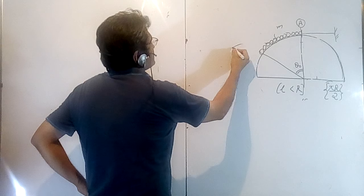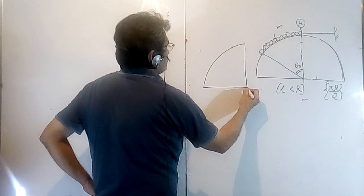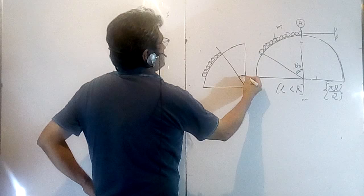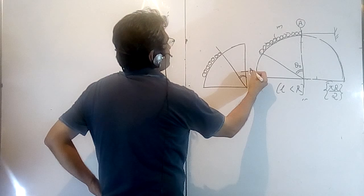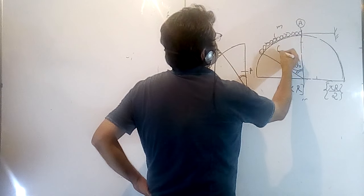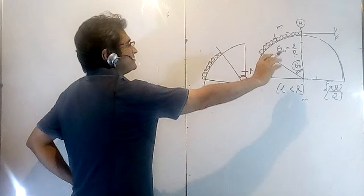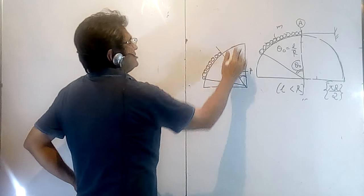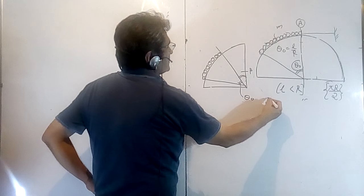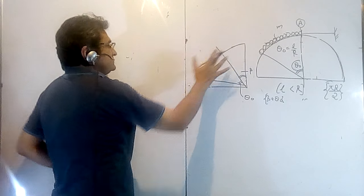Let us take a general situation where the chain makes an angle beta with the vertical. The angle theta_0 is constant — it is the angle subtended by the chain, equal to L upon R, where L is the length of the chain. Don't confuse theta_0 with beta: theta_0 is constant and beta is variable. The full angle from the vertical to the far end of the chain is beta plus theta_0.